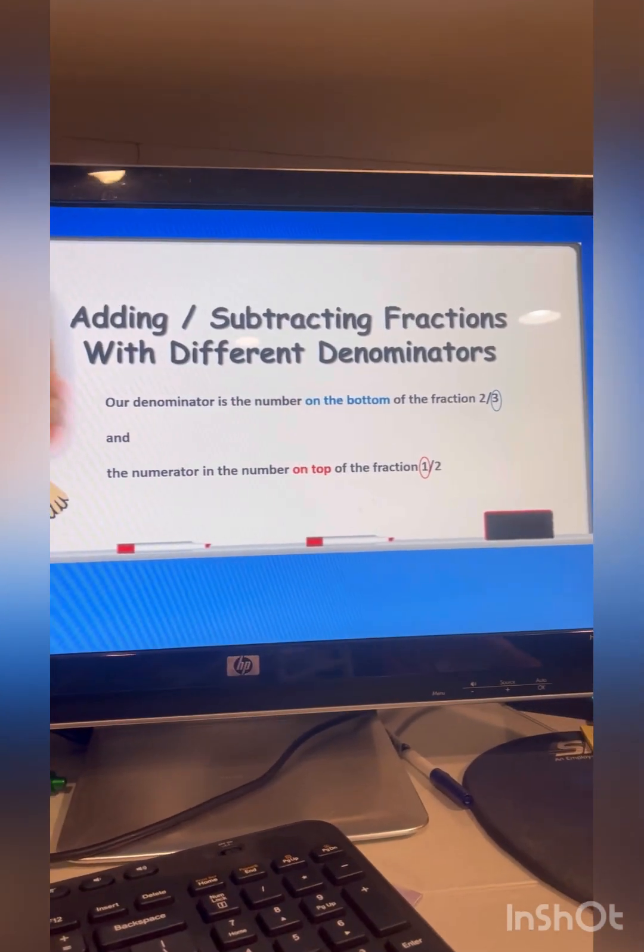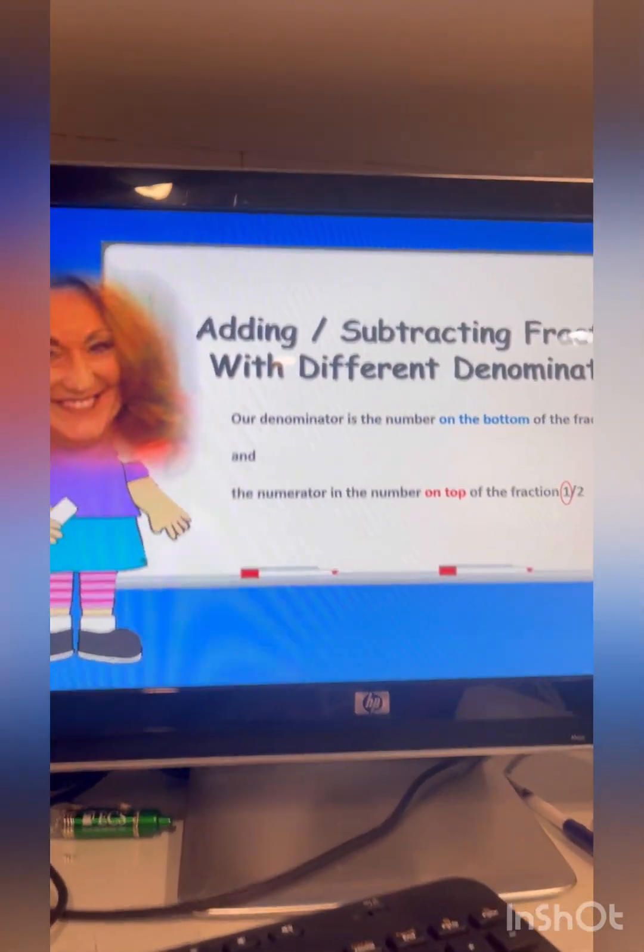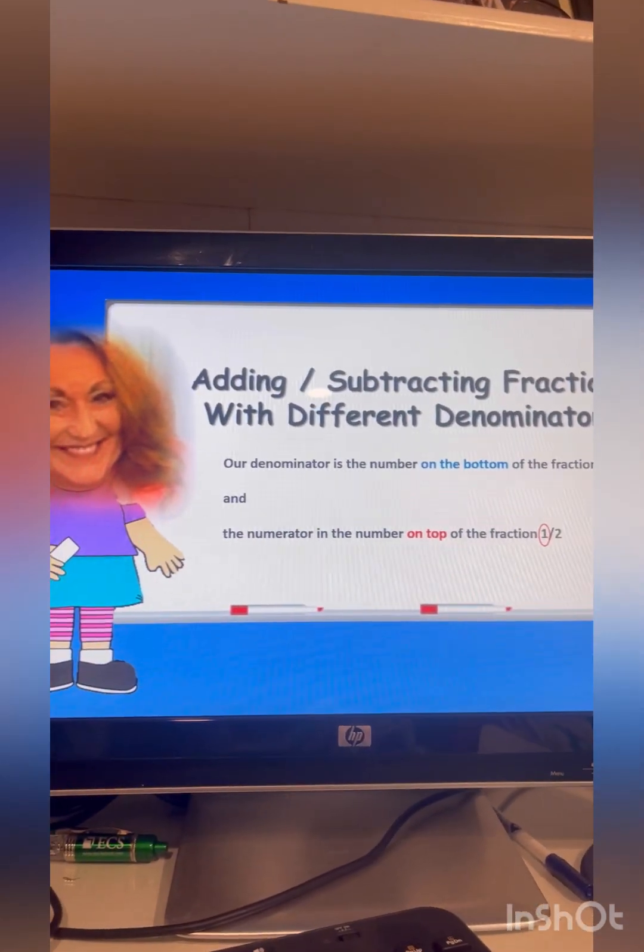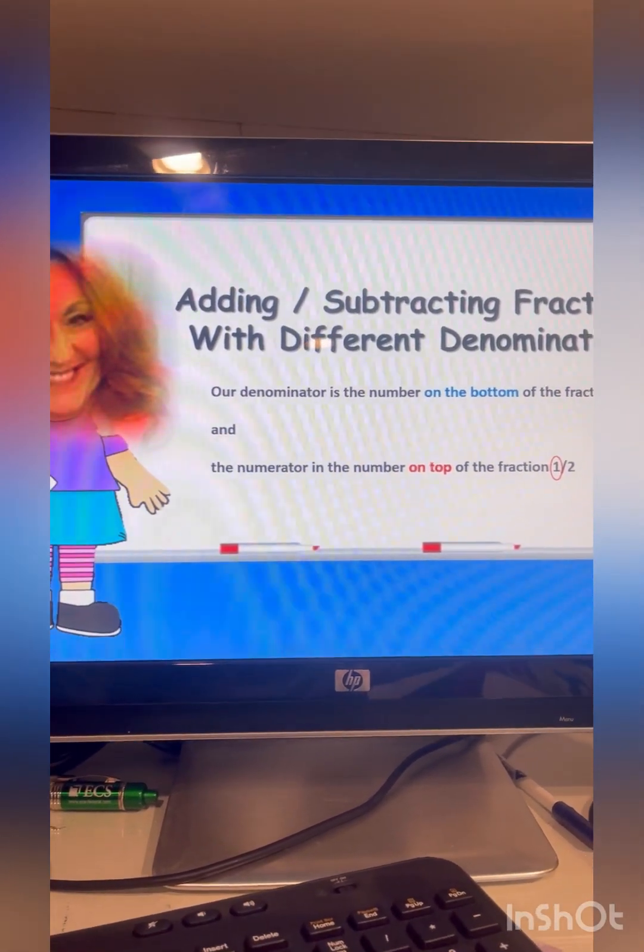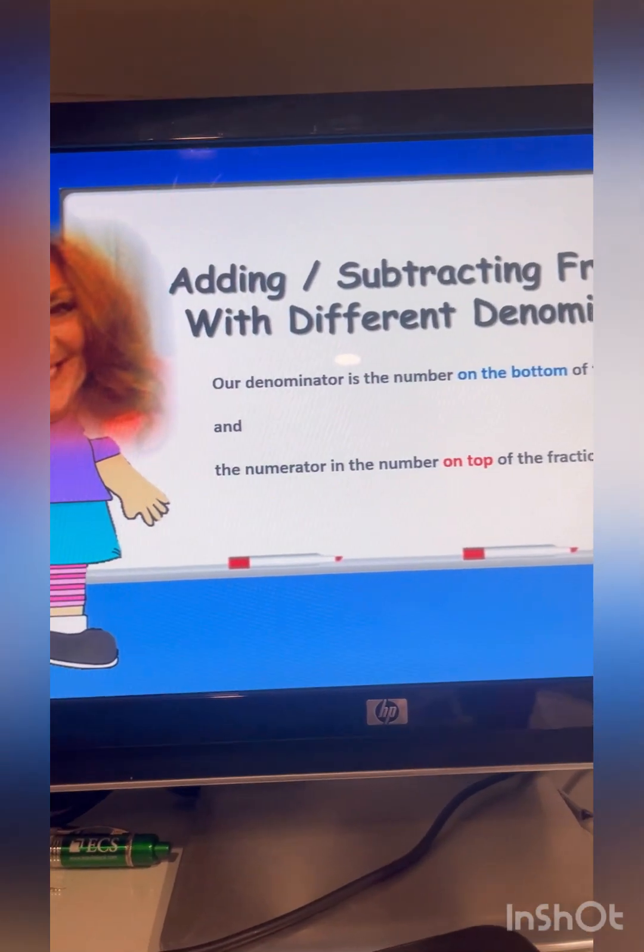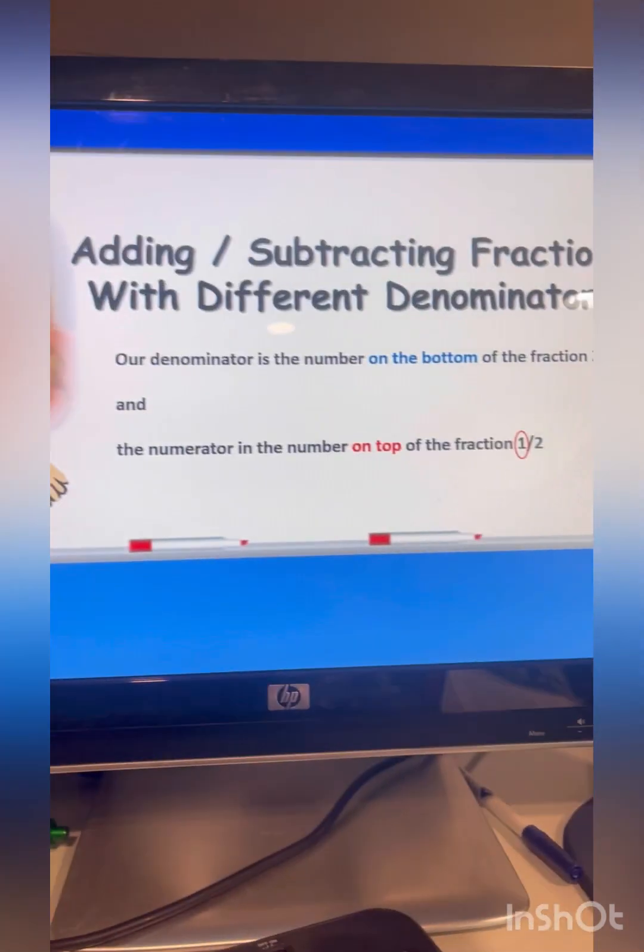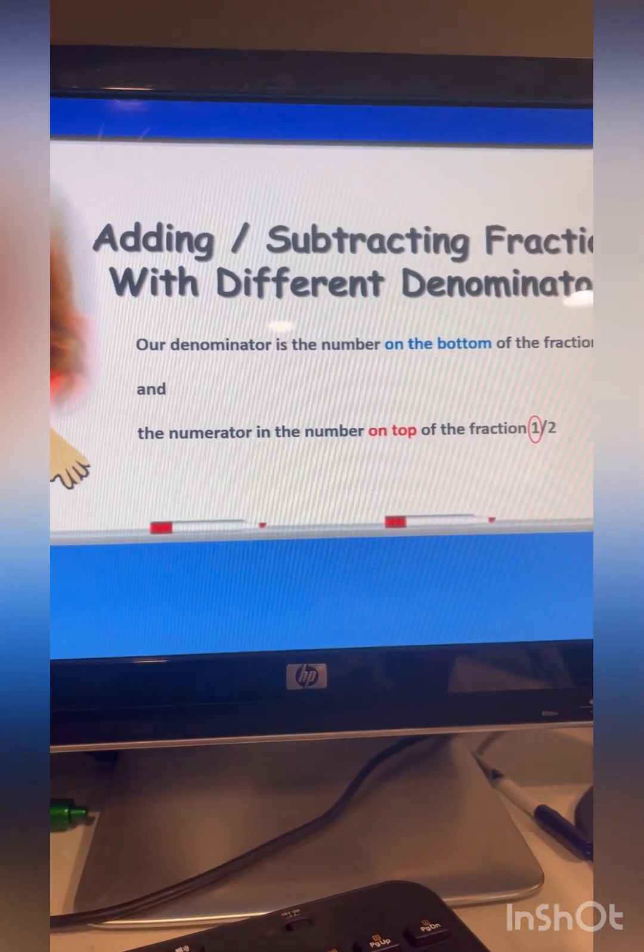What we are going to do is we're going to go over the rules of adding and subtracting fractions with different denominators, or unlike denominators. And our two-thirds, the number on the bottom, is going to be our denominator. That's what we're worried about. The number on the top is going to be the numerator.